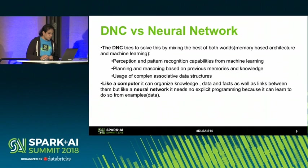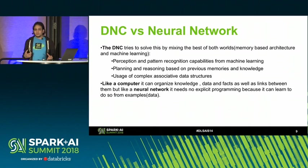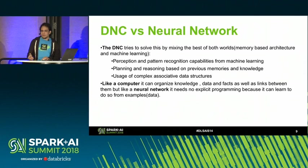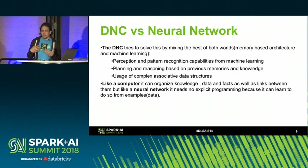How does the DNC solve this problem? It's the best of both worlds. It's a memory-based architecture like the von Neumann architecture, but using machine learning. So we get the benefits of pattern recognition and perception from machine learning, but we also get planning and reasoning based on memory-based computer architectures. We can also use associative data structures like graphs and trees. Like a computer, it can organize knowledge, store facts and information, and use that information for future use. But like a neural network, it learns to do that from data.